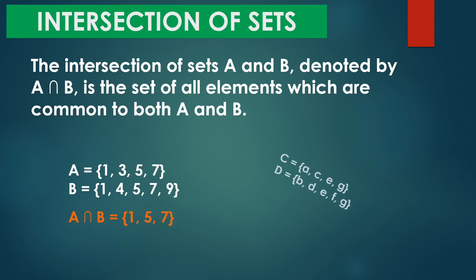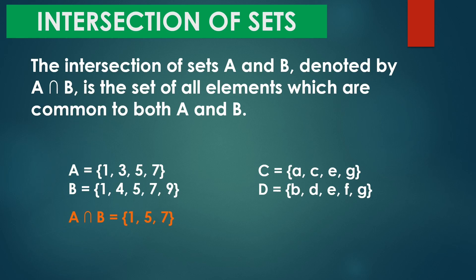Another example: set C is equal to {A, C, E, G} and set D is equal to {B, D, E, F, G}. So ano yung mga common elements silang dalawa? E and G. Therefore, the intersection of set C and set D is equal to {E, G}.